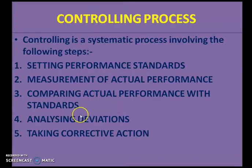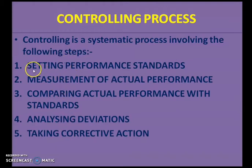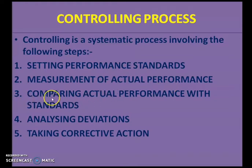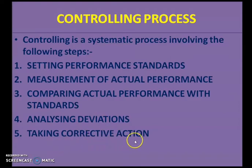There are five steps involved in the process of controlling. Controlling is a systematic process. The first step is setting performance standards. Second is measurement of actual performance. Third is comparing actual performance with standards. Fourth is analyzing deviation, and the fifth is taking corrective action. Let us have a brief discussion on each of these steps.